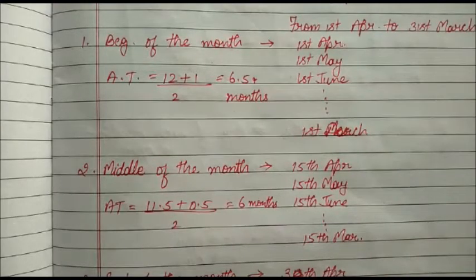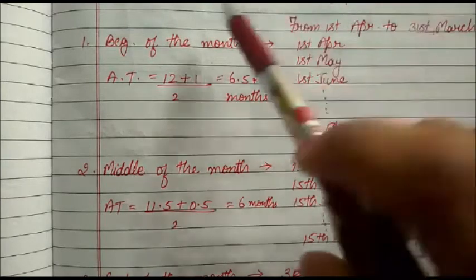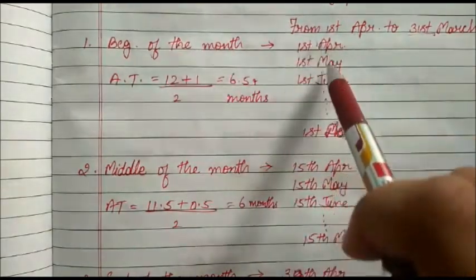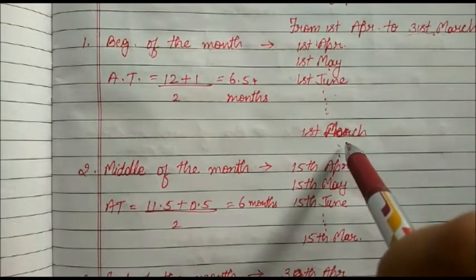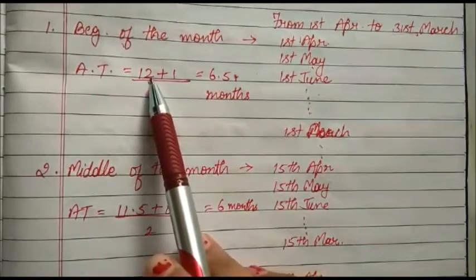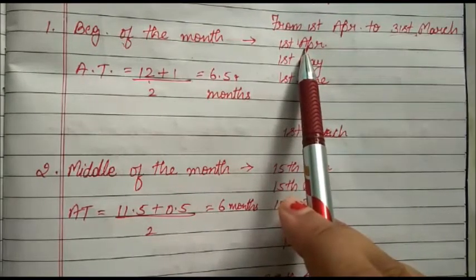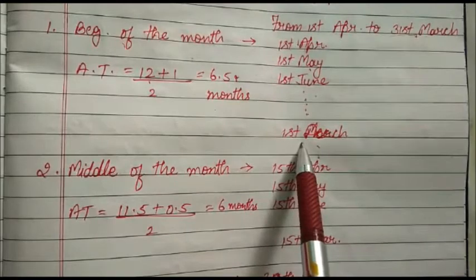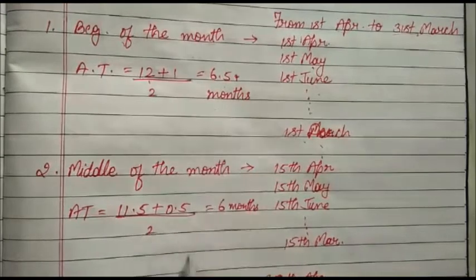Now we see situations for calculating average time under regular intervals. Taking the accounting period 1st April to 31st March: if the partner withdraws money at the beginning of each month — 1st April, 1st May, 1st June ... 1st March — months left after the first drawing on 1st April = 12 months; months left after the last drawing on 1st March = 1 month. So average time = (12 + 1) ÷ 2 = 6.5 months.